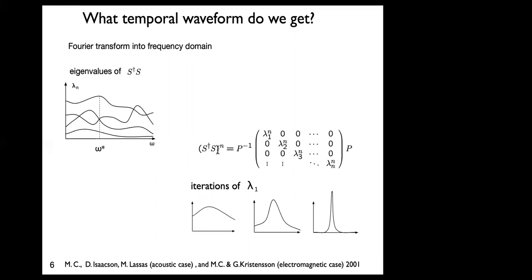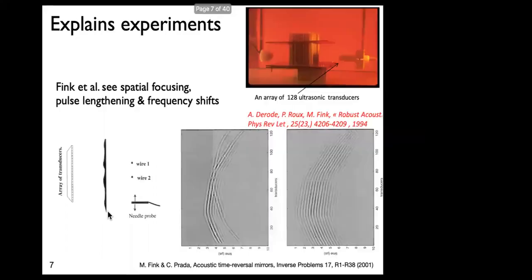You can understand this from the power method: if you diagonalize the matrix and raise it to a power, you just raise all the eigenvalues to that power. When you raise something with a local maximum to a power, the peak sharpens. As you take higher and higher powers, the peaks sharpen and eventually become delta functions in frequency. The peak occurs at the largest value of whichever eigenvalue you're looking at — so you choose the largest one.